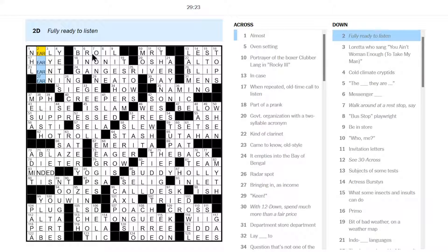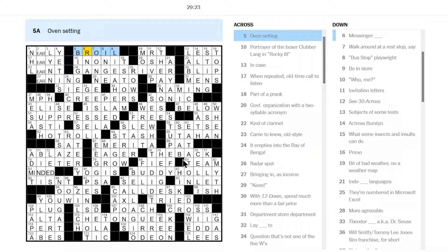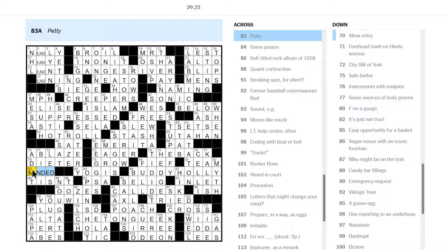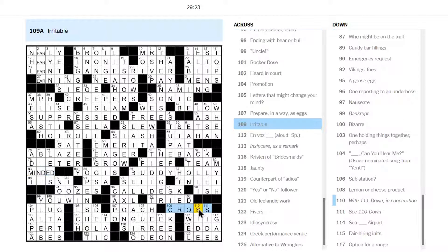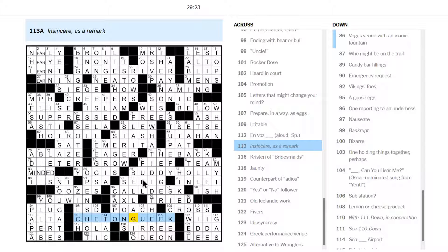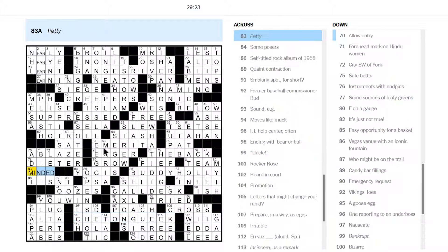That was the Sunday New York Times. Constructed by Christina Iverson and Katie Hale. Body language is the theme. I'm guessing, right, these all have to do with body parts. Okay. Right. Your ears. Your legs. Your back. Your belly. Your mind is not really a part of your body, I guess. Your brain is a part of your body. Your mind is sort of ephemeral. But you have sides as well. Oh, and this one as well. Your cheek. Right. Tongue and cheek.